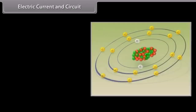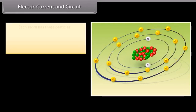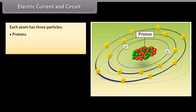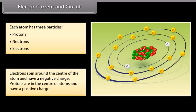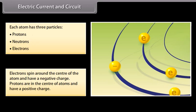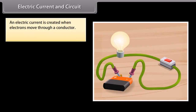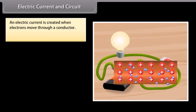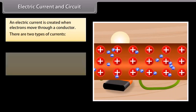All things around us are made up of atoms. Each atom has three particles: protons, neutrons, and electrons. Electrons spin around the center of the atom and have a negative charge. Protons are in the center of atoms and have a positive charge. An electric current is created when electrons move through a conductor. There are two types of currents.